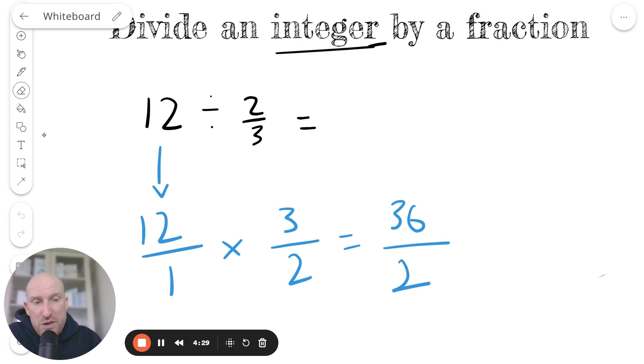So first, what I'm going to do is simplify this. So 36 over 2, if I divide both these two numbers by 2, if I half both of the numbers, the 36 turns into an 18 and the 2 will turn into a 1. So 36 over 2 is the same as 18 over 1. They're both equivalent.